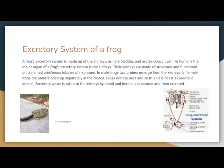The excretory system of a frog is made of the kidneys, urinary bladder, and urethra/cloaca. Just like humans, the major organ of a frog's excretory system is the kidneys. Their kidneys are made of structural and functional units named uriniferous tubules or nephrons. In male frogs, two ureters emerge from the kidneys. In female frogs, the ureters open up separately in the cloaca. Frogs excrete urea, which classifies them as ureotelic animals. Excretory waste is taken to the kidneys by blood, where it is separated and then excreted.